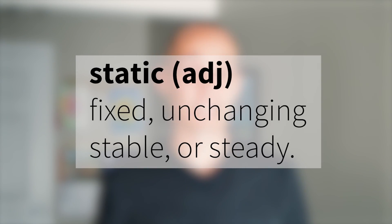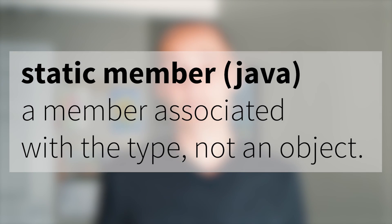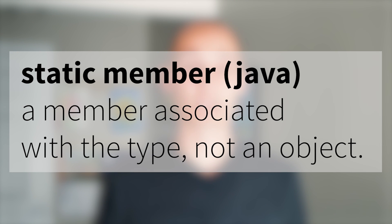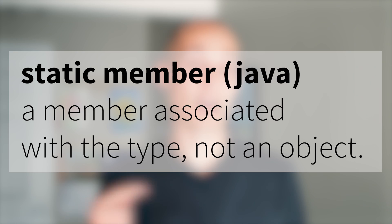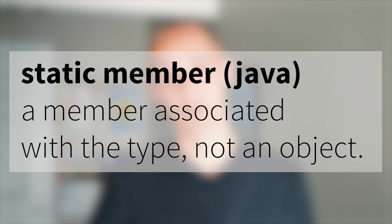In English, static means fixed, unchanging, stable, or steady. In a Java class, static means that a member of that class is associated with the type, not an instance of the type. And in C, it means something else. In C, you can make a global variable static, you can make a function static, or you can make a local variable static. We don't have classes, so you can't make class members static.